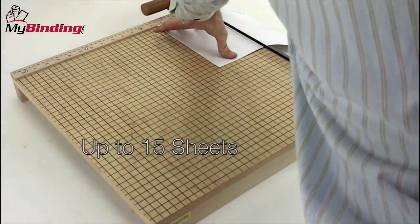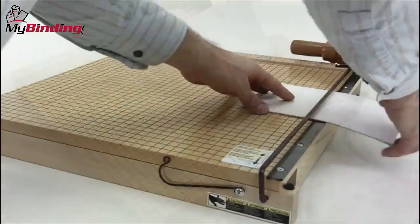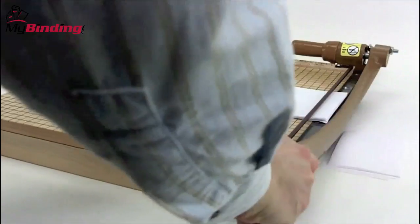This Swingline Ingento can handle up to 15 sheets of 20-pound paper. That was eight. This is 16. No problem.